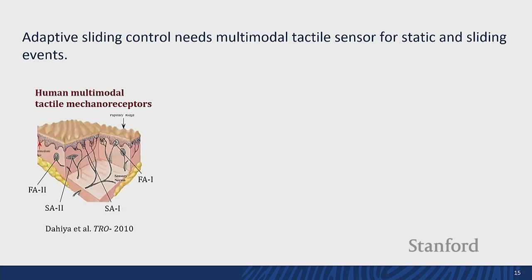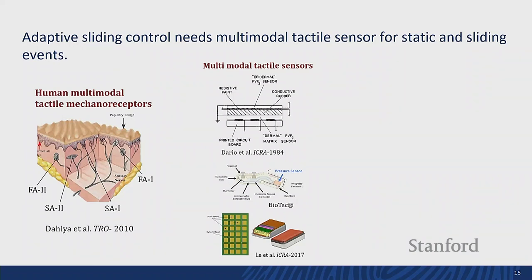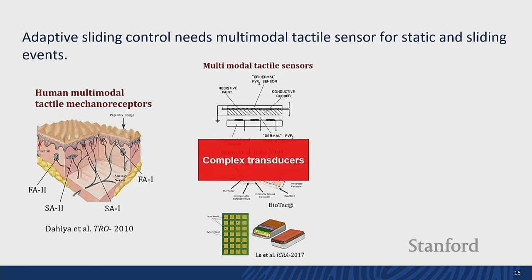To achieve extrinsic dexterity, I think we should have tactile sensors that resemble human mechanoreceptors. We have four types of tactile mechanoreceptors covering static pressure, dynamic response induced by contact events, and slip. Many researchers have developed multimodal tactile sensors, but most use multiple transducers for each type of modality, making the system complex to process and difficult to scale.